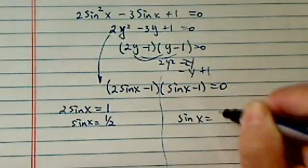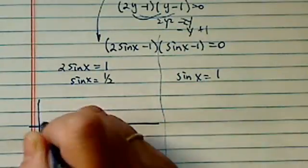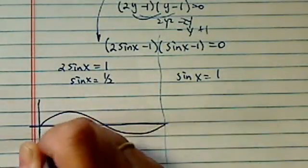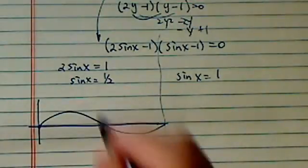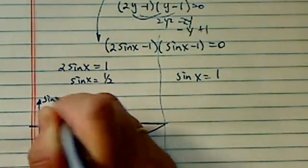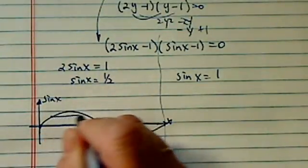The best way to solve or find angles is to draw a sine curve. So it's basically looking like this. Sine curve starts with 0. We're looking for half. This is sine of x. This one is x. So this is pi. And we're looking for half.